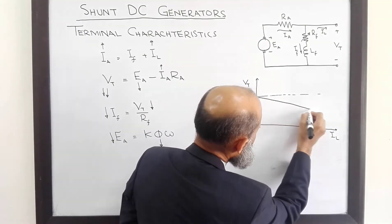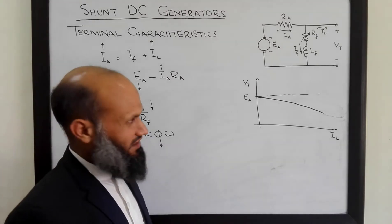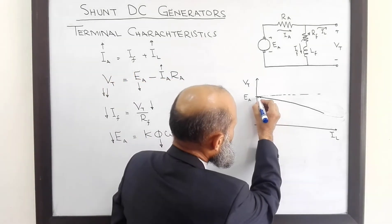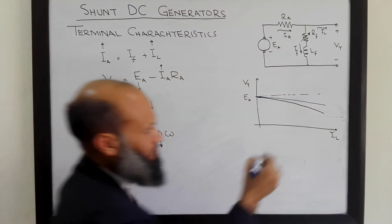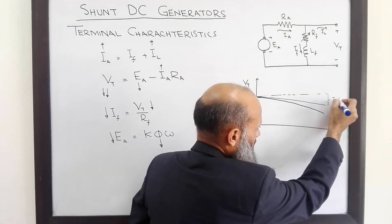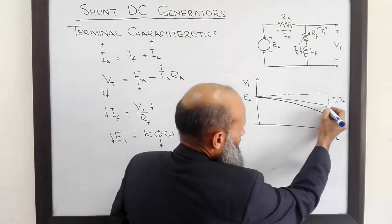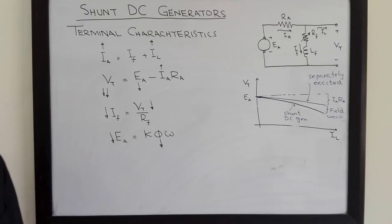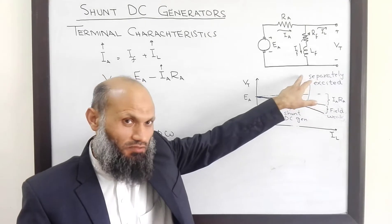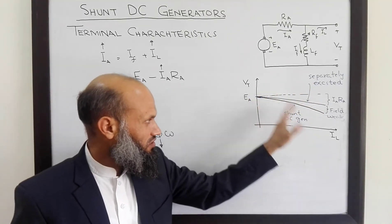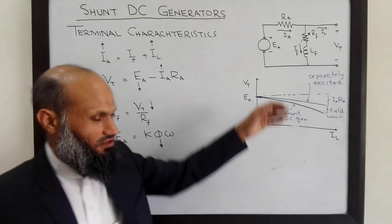These are the terminal characteristics of shunt DC generators. Recall the terminal characteristics of separately excited DC generators — there was only one effect, the Ia·Ra voltage drop. Over here, there are two effects: this drop and the field weakening effect. As far as terminal characteristics of shunt DC generators are concerned, these are worse compared to the separately excited DC generator. The fall in terminal voltage is more rapid in the case of shunt DC generators with increasing load, compared to separately excited DC generators.